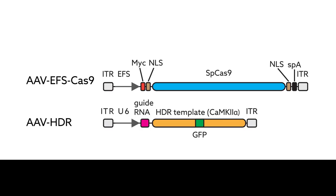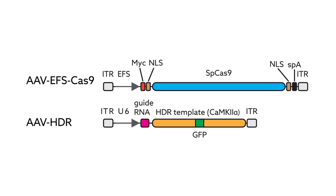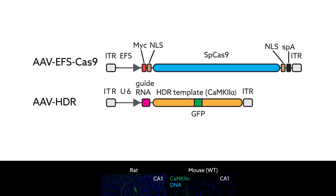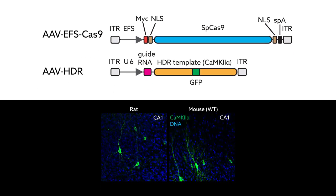The group then created a dual-viral system, so they could use the technology in many animals that have not been engineered to express Cas9. This worked in both rat and mouse brain slices.